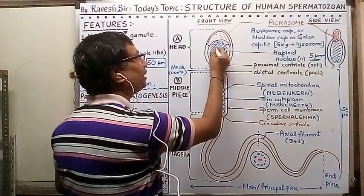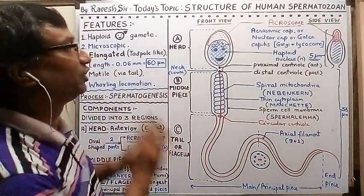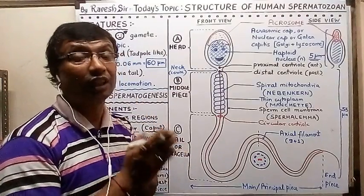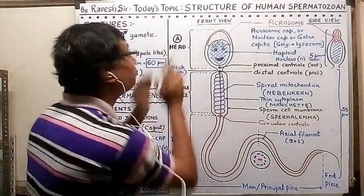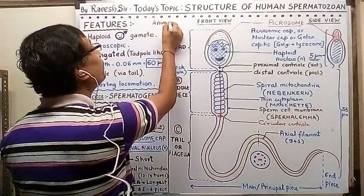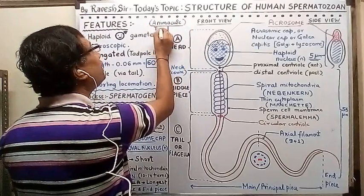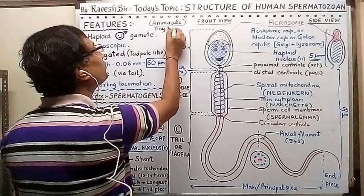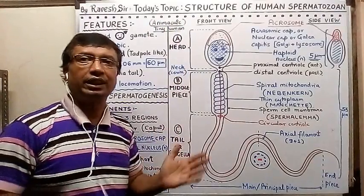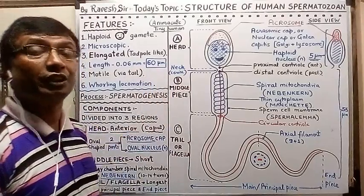An interesting historical note: the father of microbiology, Leeuwenhoek, first observed sperm and named them. He thought they were tiny tiny humans. Students, with this we have completely covered the structure of the ovum and sperm.